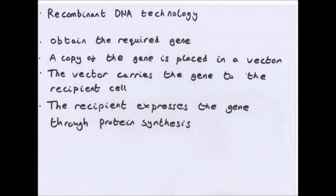In genetic engineering you need the following steps: you need to obtain the required gene, you need to get a copy of the gene and place it in a vector, the vector must carry the gene to the recipient cell, and the recipient must express the gene through protein synthesis.